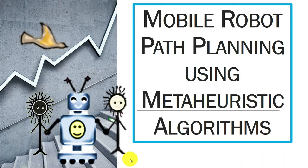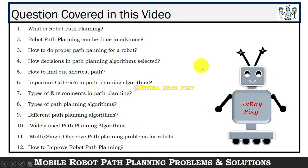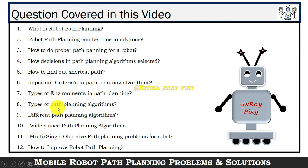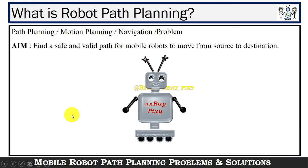In the field of mobile navigation research, path planning is one of the most important problems widely discussed by researchers. In this video, you will learn the role of meta-heuristic algorithms in mobile robot path planning. Questions covered include: what is robot path planning, how to do proper path planning, how to find the shortest path from source to destination, important criteria in path planning algorithms, types of environments, types of algorithms, widely used algorithms, and how to improve robot path planning.